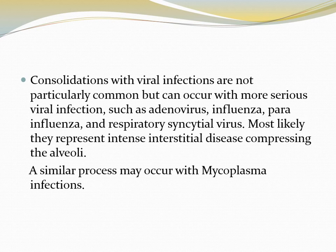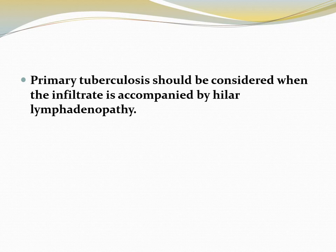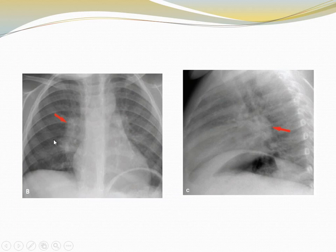Consolidations with viral infection are not particularly common, but can occur with more serious viral infections such as adenovirus, influenza, para-influenza, and respiratory syncytial virus. Most likely they represent intense interstitial disease compressing the alveoli. A similar process may occur with mycoplasma infections. Pneumonia caused by gram-negative bacilli is uncommon in children, occurring primarily in infants and immunocompromised children. Primary tuberculosis should be considered when the infiltrate is accompanied by hilar lymphadenopathy. There is opacification in the right middle zone with a prominent right hilum. After treatment, the consolidation resolved but the enlarged hilar lymph node remains.